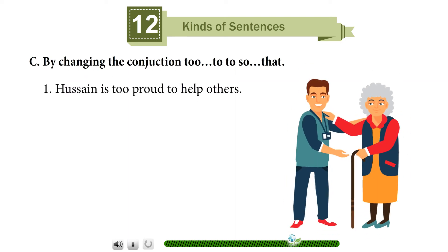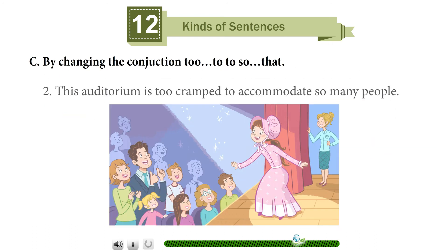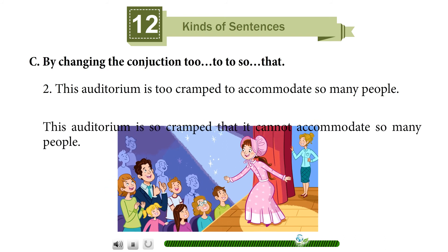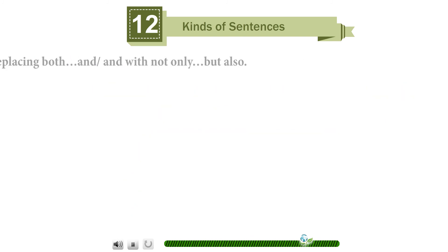Method C: by changing 'too...to' to 'so...that.' Example: 'Hussain is too proud to help others' becomes 'Hussain is so proud that he will not help others.' 'This auditorium is too cramped to accommodate so many people' becomes 'This auditorium is so cramped that it cannot accommodate so many people.'